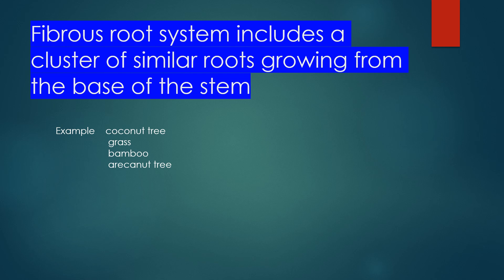Examples of fibrous root systems include coconut tree and grass. Bamboo is another example of a plant with a fibrous root system.